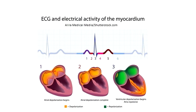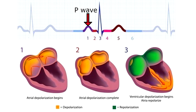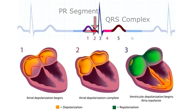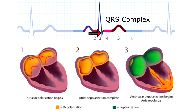Now let's recap all that information and look at the PQRST complex to see how depolarization and repolarization occur in each part. Section one is the P wave — atrial depolarization beginning, so contraction of the atria. Section two was the PR segment — atrial depolarization complete. Section three was the QRS complex — ventricular depolarization beginning, and within it, atrial repolarization, meaning the atria are relaxing.